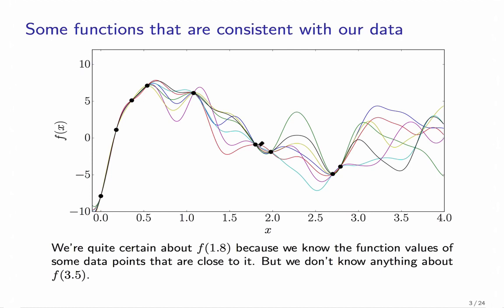You can see that for input 1.8, we seem to be pretty certain about what the output should be, as basically all functions go through a very narrow range. And for 3.5, we have multiple possibilities in a larger range for the output. But let's look at what a Gaussian process is a little more formally.